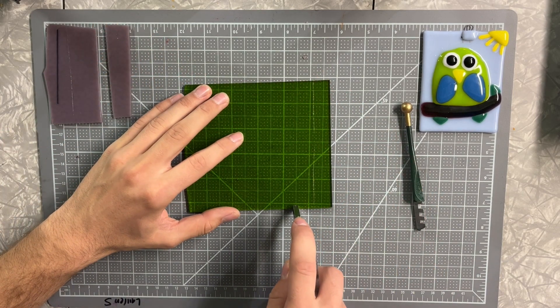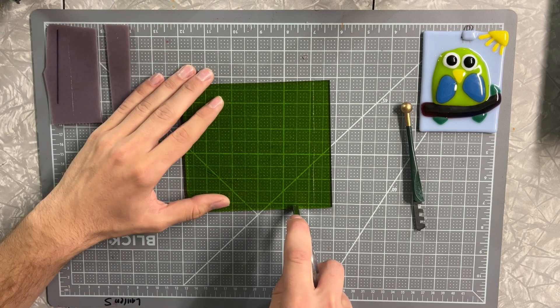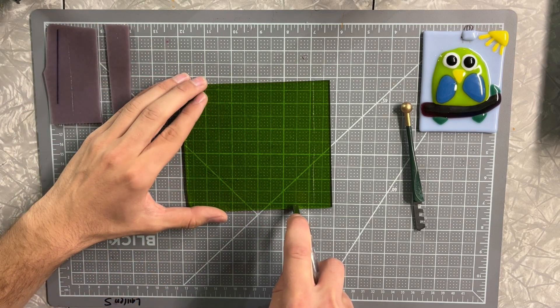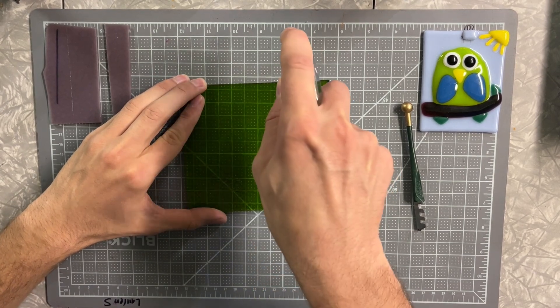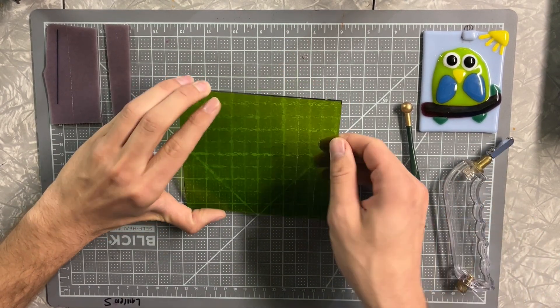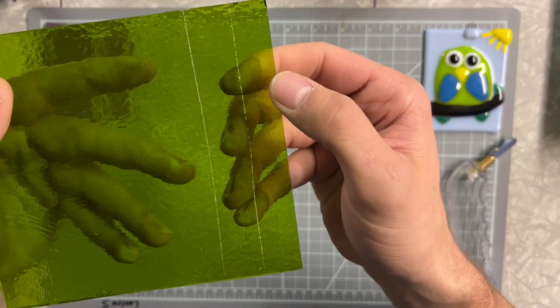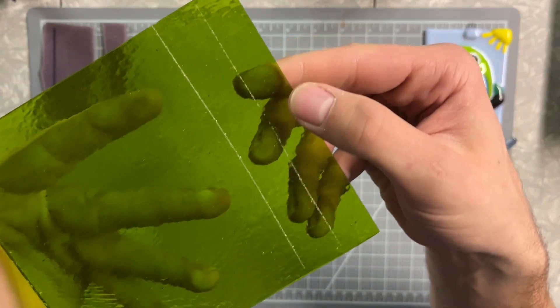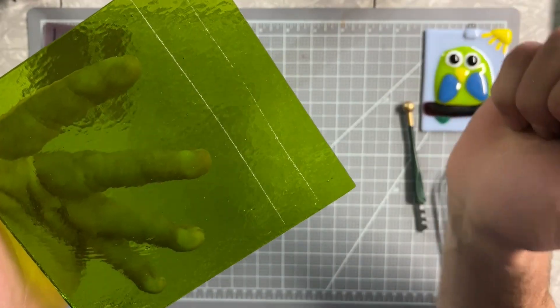I'll go ahead and use this one. This time I'll push away from me. Starting at the edge again, a little bit of pressure, and I'm holding my glass cutter at that 45-degree angle, making that nice noise that sounds like Velcro being torn apart.